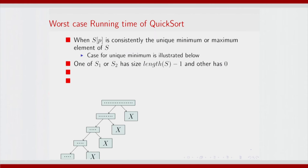Let us try and understand the running time of quicksort. What is the worst case? Well, the worst case is when the split requires most elements to be moved. When s[p] happens to be the unique minimum or the maximum element of s, you will basically need to move every other element, and this case is illustrated below. This case of unique minimum will mean lots of swaps — basically for an array of size n you will have to do n minus 1 swaps.